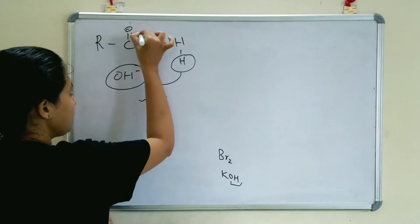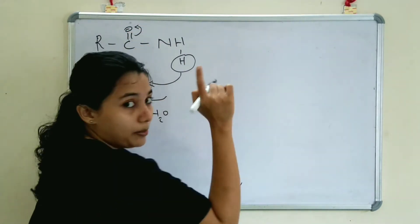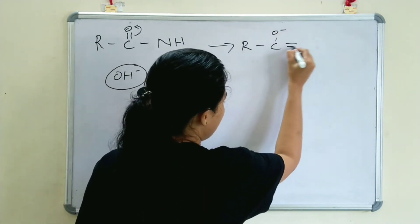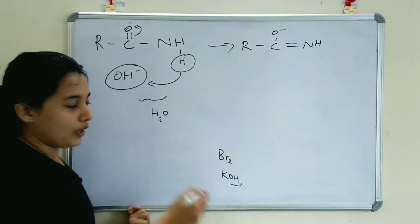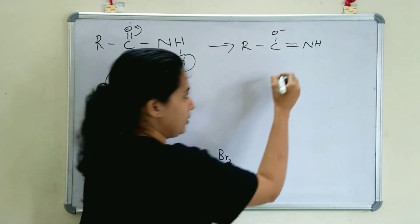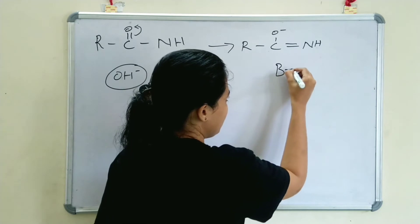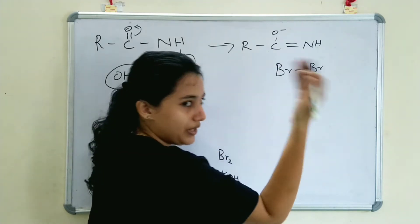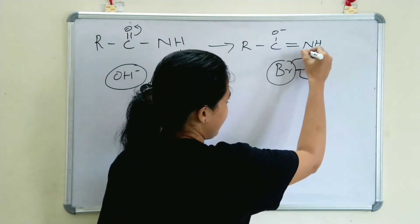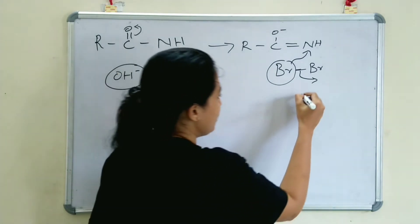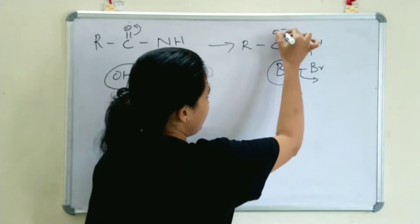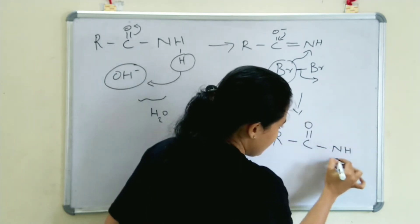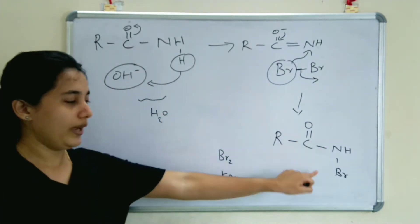The electron shifts and a double bond forms, giving R-C(=O)-NH. Now Br2 attacks the nitrogen — one Br is eliminated and the bromide attaches to nitrogen, giving R-C(=O)-NH-Br.